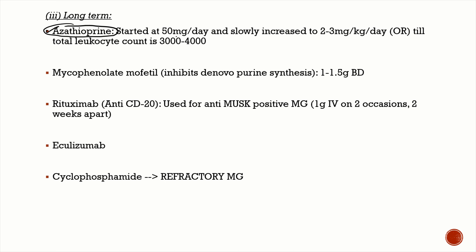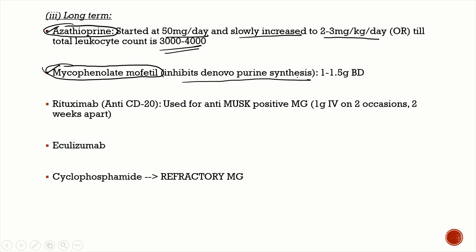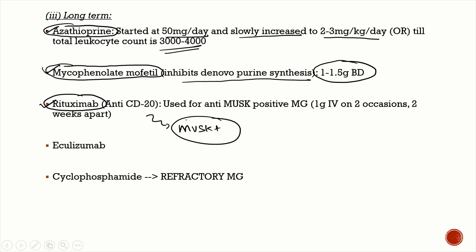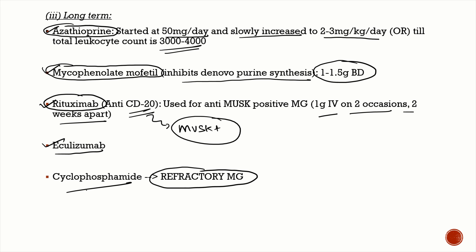Long-term immunosuppressants take months to act. Azathioprine starts at 50 mg/day, increased to 2–3 mg/kg/day or until total leukocyte count is 3,000–4,000. Mycophenolate mofetil inhibits de novo purine synthesis, has minimal GI toxicity (nausea, vomiting) and some leukopenia, but is extremely teratogenic; dose is 1–1.5 g twice daily. Rituximab (anti-CD20 monoclonal antibody) is specifically indicated for anti-MuSK positive MG, dosed at 1 g IV given on two occasions two weeks apart. Eculizumab is an option but extremely costly; cyclophosphamide is the drug of choice for refractory MG.